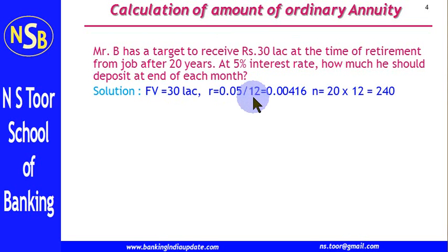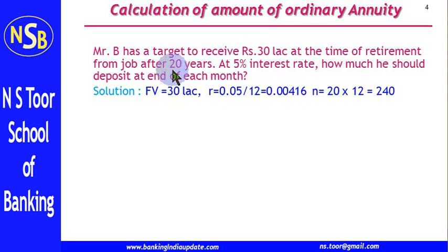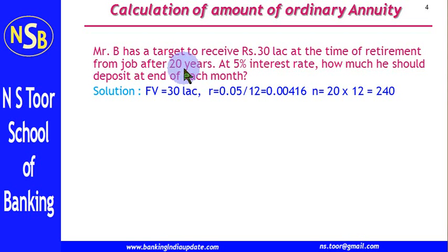This is the information given to us. The future value given is Rs 30 lakh. The rate of interest is 5%, but this is an annual interest rate, so we will convert it to monthly: 5% divided by 12. We have 20 years, but the deposit is on a monthly basis, so this will be converted into months: 20 into 12 is 240 months.